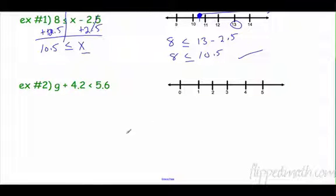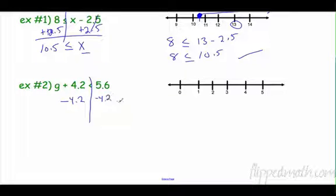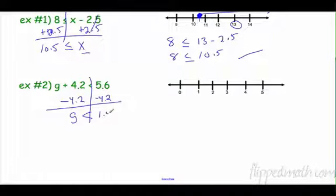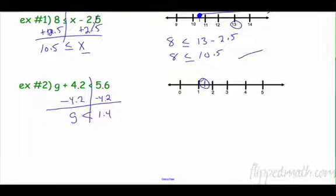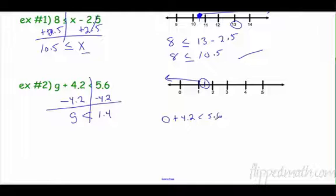Next: G plus 4.2 is less than 5.6. The first thing I need to do is get G by itself. The opposite of adding is subtracting, so I subtract 4.2 from both sides and get G is less than 1.4. It's not equal to, so it's an open circle at 1.4. I want all numbers less than that, going this way. Let's pick 0 to check: is 0 plus 4.2 less than 5.6? That's 4.2 — is 4.2 less than 5.6? It sure is. It checks.